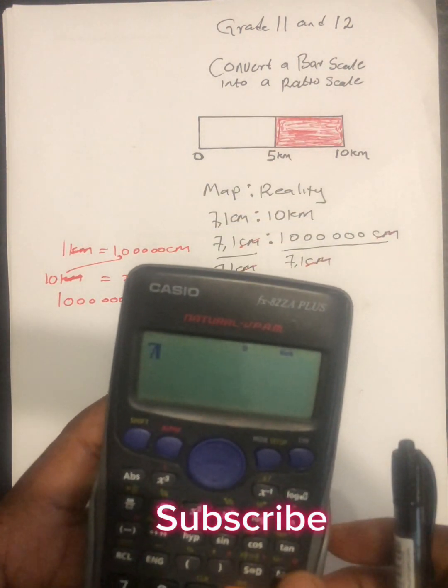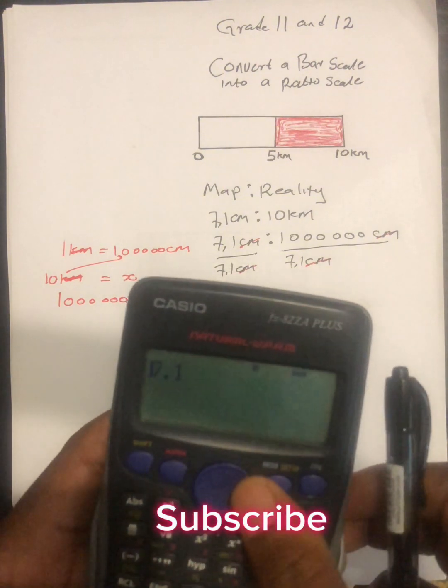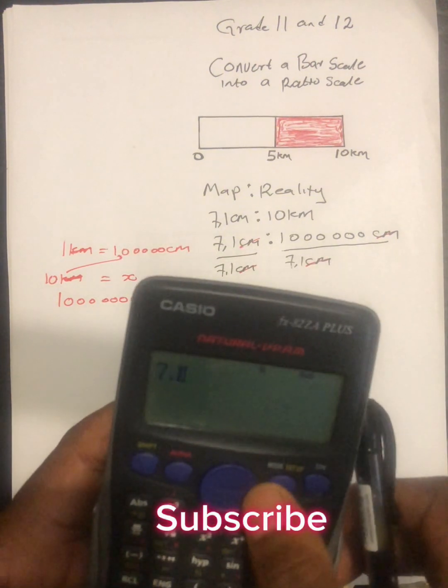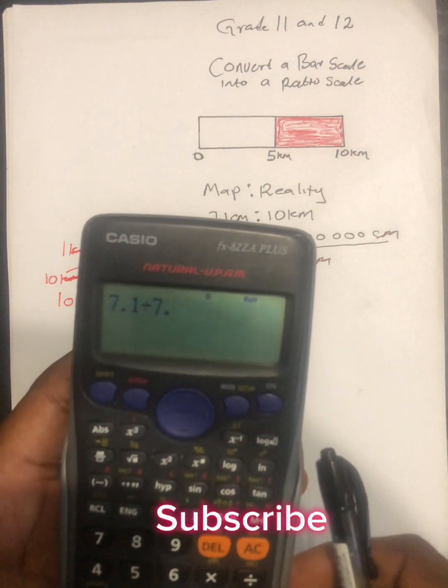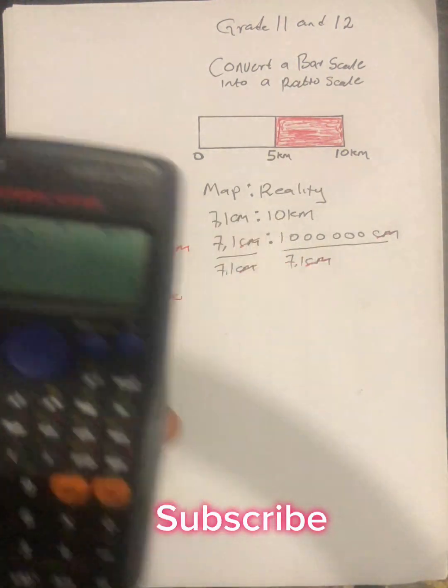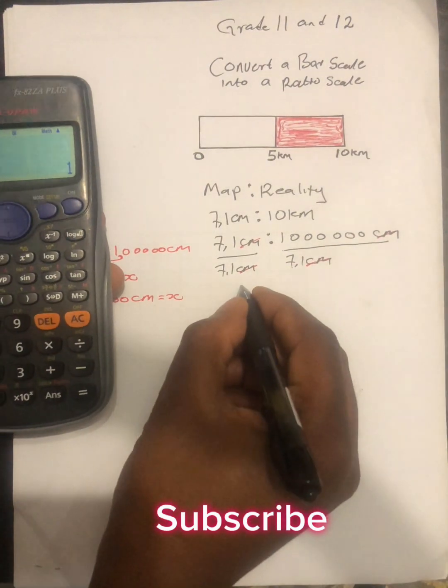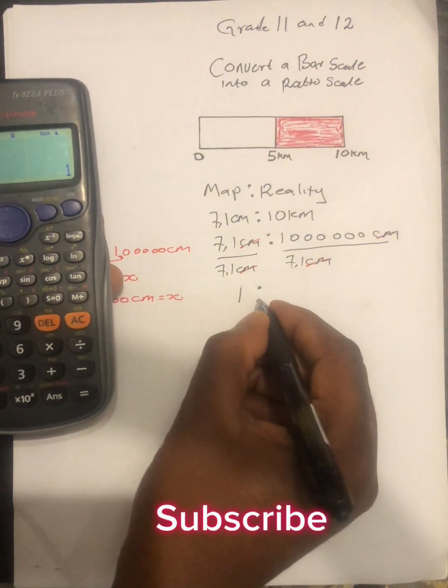In these numbers, we are going to say 7.1 divided by 7.1. We find that our answer is 1. Now we are having 1 is to...